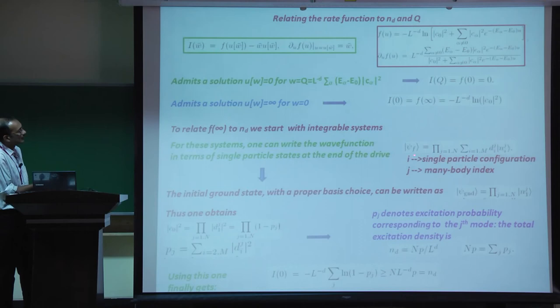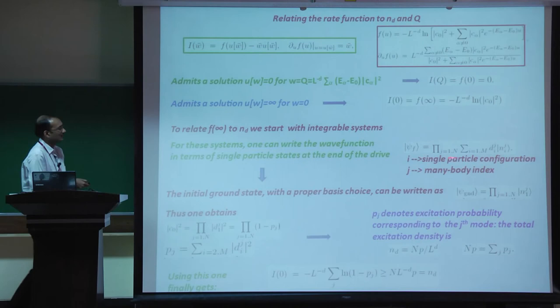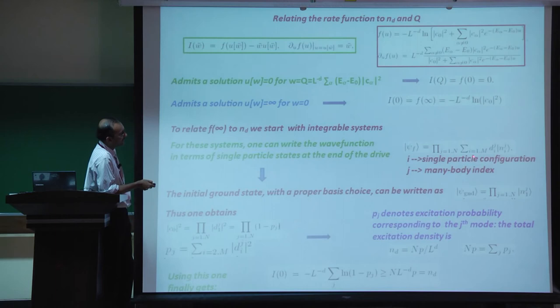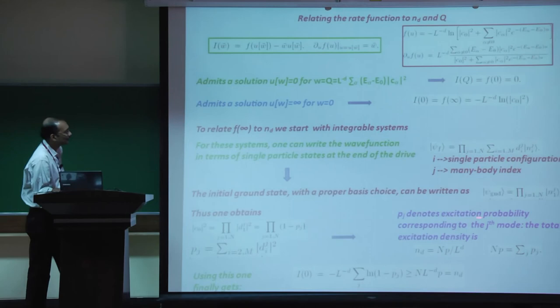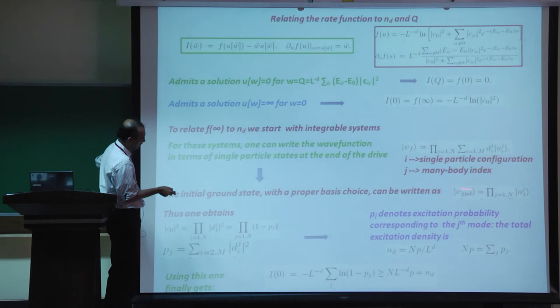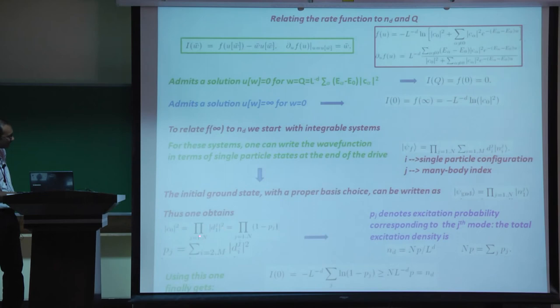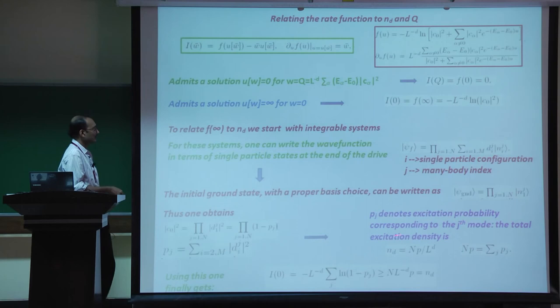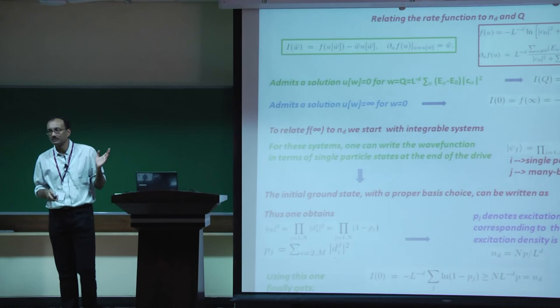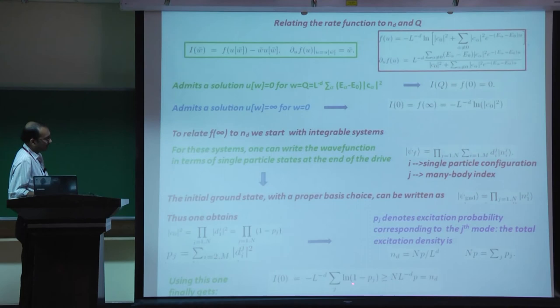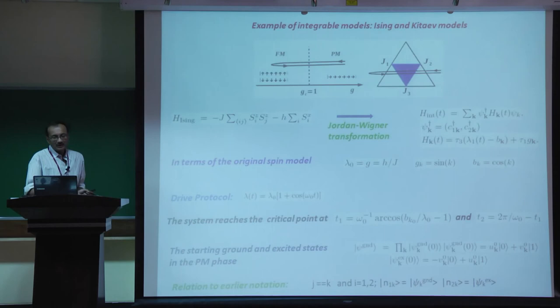For integrable models, the state at the end of the drive can be written in terms of single-particle states. Choosing the appropriate basis, the ground state wave function is just |N_1⟩, so |c_0|^2 = product over j of |d_{1j}|^2 = product of (1 - p_j), where p_j is the excitation probability for each momentum mode j. This tells you that I(0) >= N_d, where N_d is the excitation density.